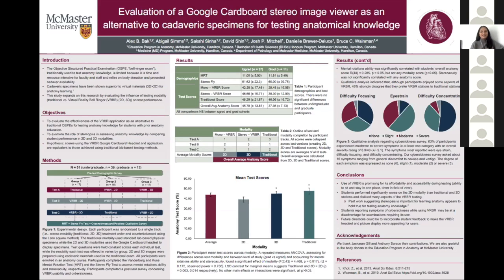As you can see in Figure 2, the traditional and 3D VRBR methods are significantly better than 2D VRBR. Thus, if we were to bring VRBR use into an anatomy curriculum, 3D VRBR would be best because it is comparable to traditional methods. We concluded that the use of VRBR is promising for its affordability and accessibility during testing. However, one of the drawbacks we found was that 63% of students reported moderate to severe symptoms in at least one category of the Cyber Sickness Survey — the most common symptoms were difficulty focusing, eye strain, and difficulty concentrating. This is very important because students reporting these symptoms may be at a disadvantage for examinations requiring its use. Going forward, we definitely need to explore whether cyber sickness symptoms have any statistical significance to test performance.